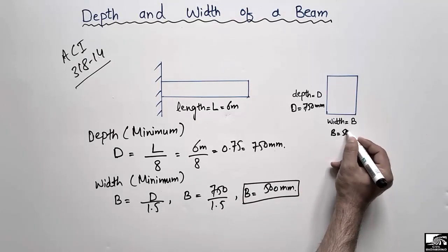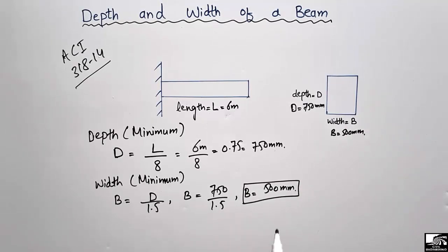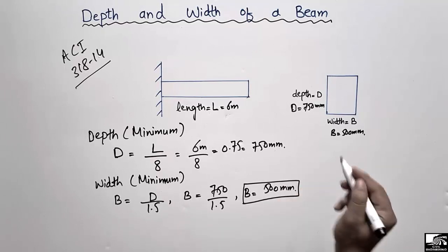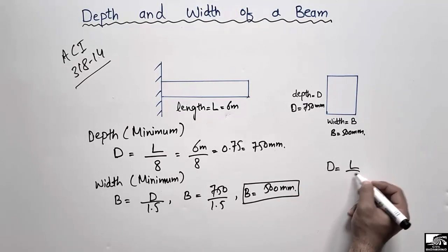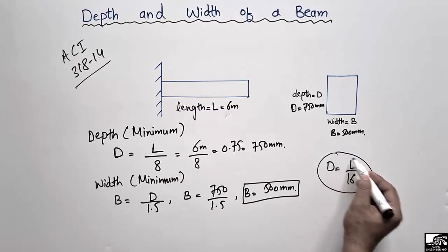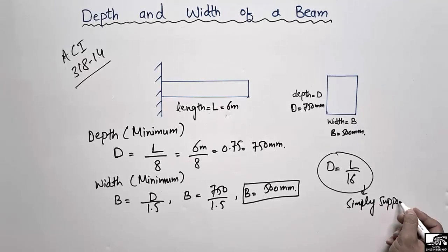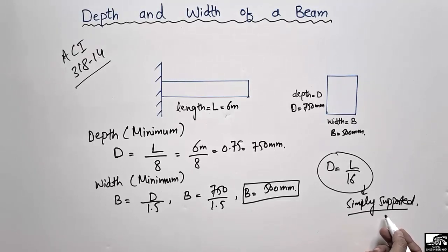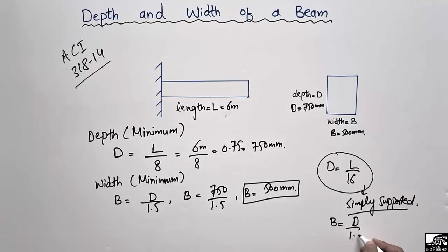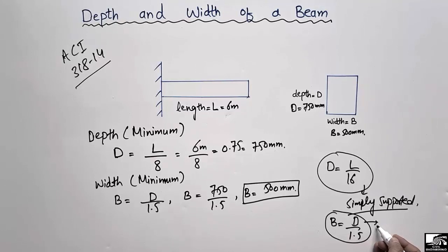Similarly, we can also find the minimum depth and width for a simply supported beam using the formula where the depth of the beam equals L divided by 16. I also made a separate video on this topic. The width for a simply supported beam is also equal to d divided by 1.5 — this formula is the same for both cantilever and simply supported beams, but the depth formula changes.